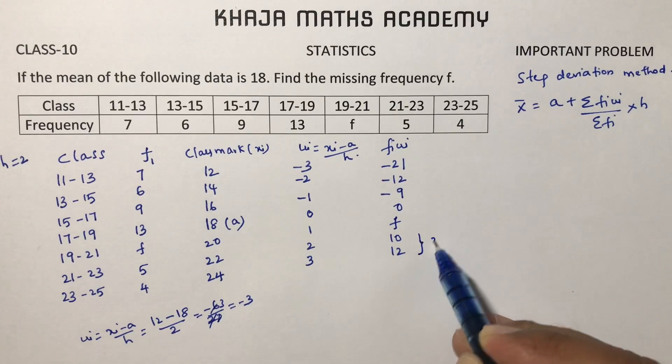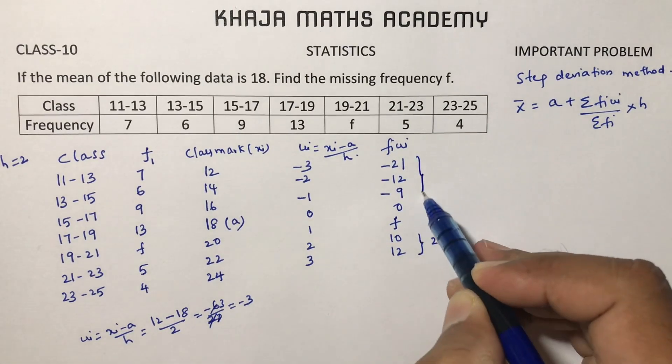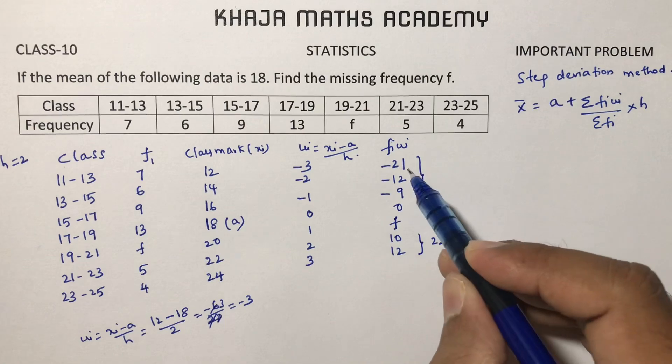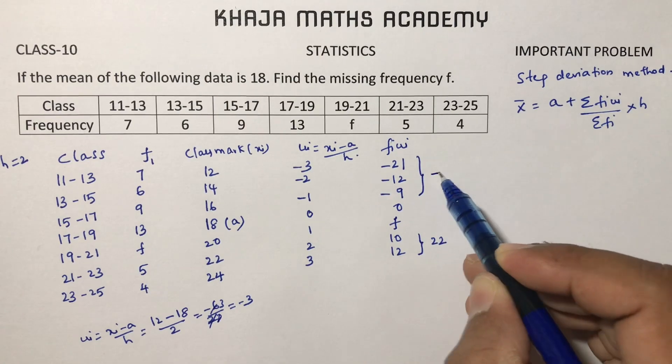Here positive values are 22 and negative values are minus 42.